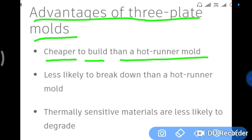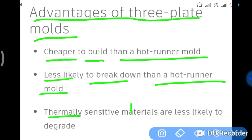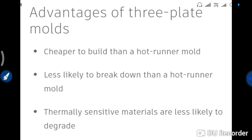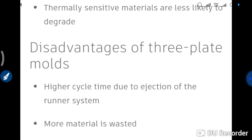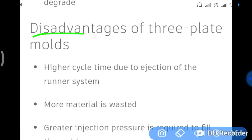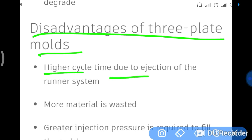Advantages of the three-plate mold include that it is cheaper to build than a hot runner mold, and it is less likely to break down than a hot runner mold. Thermally sensitive or heat-sensitive polymers and plastics are less likely to degrade when used with the three-plate mold.